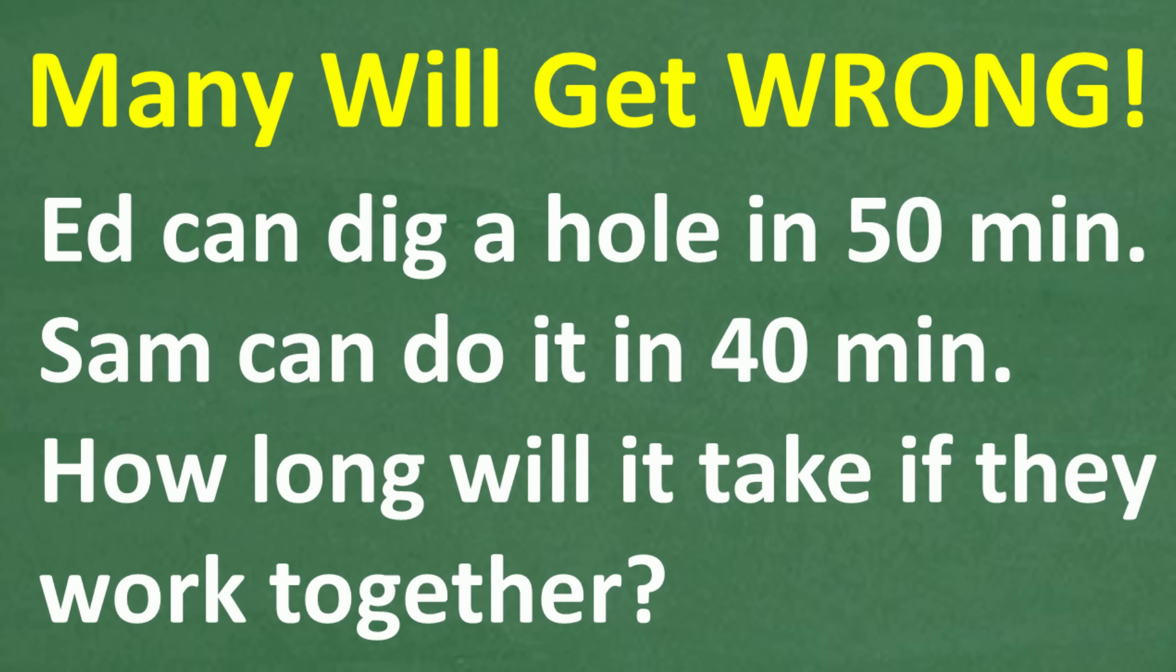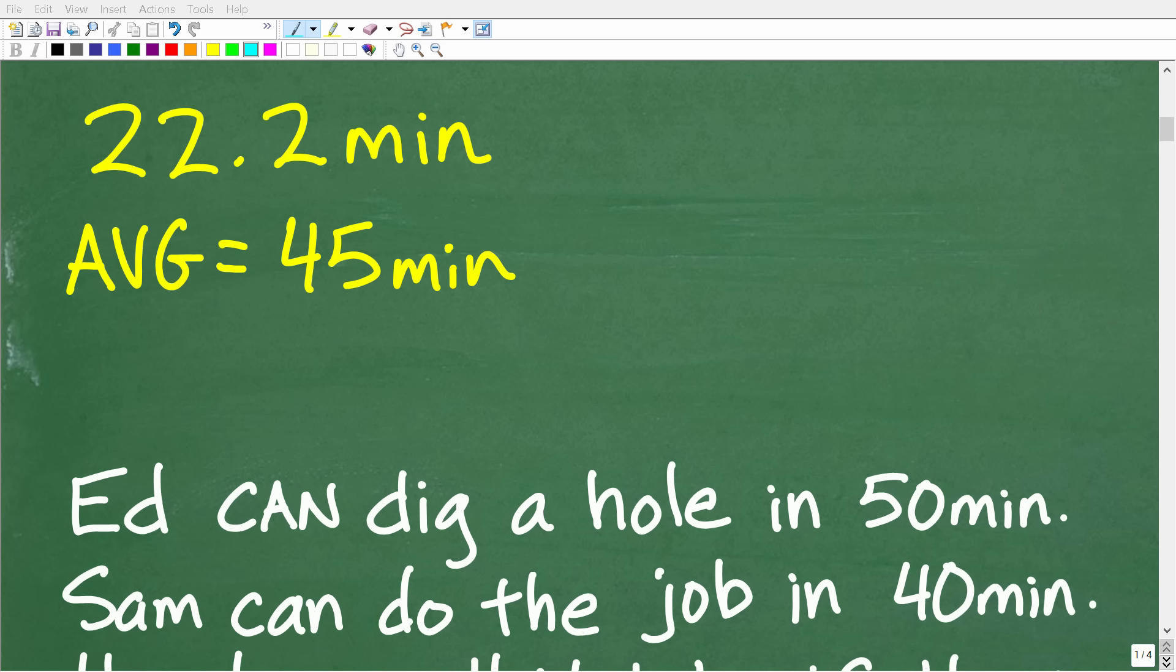So one more time, here is the question. Ed can dig a hole in 50 minutes. Sam can do the same job in 40 minutes. How long will it take if they work together? So, the correct answer is 22.2 minutes.